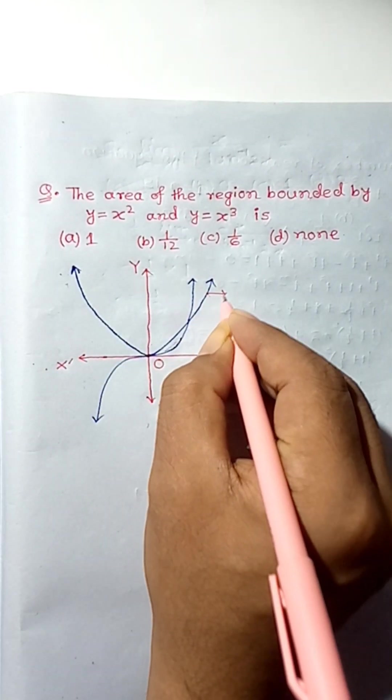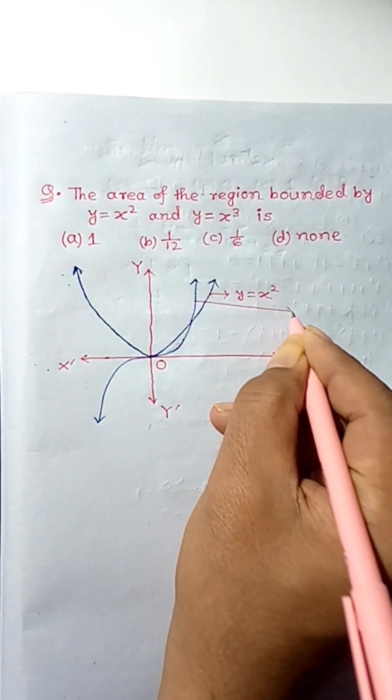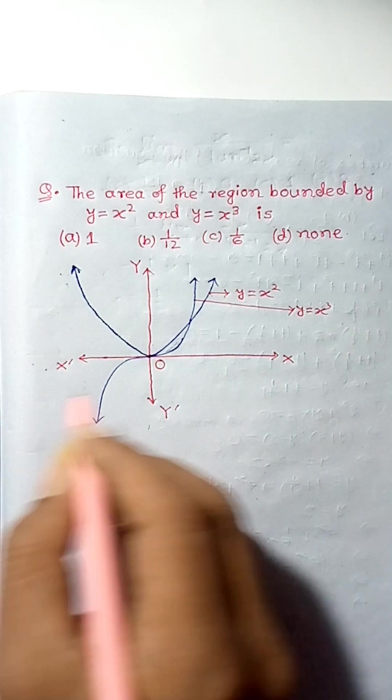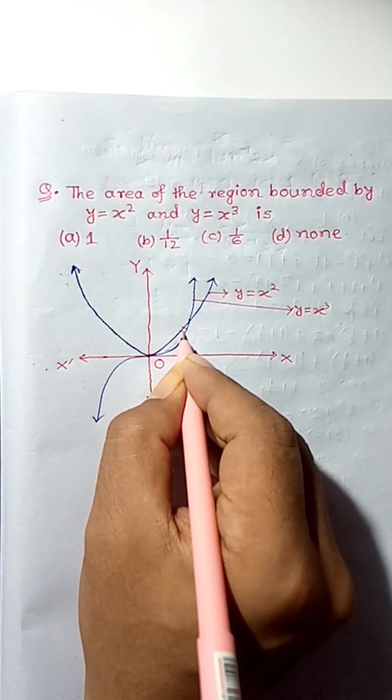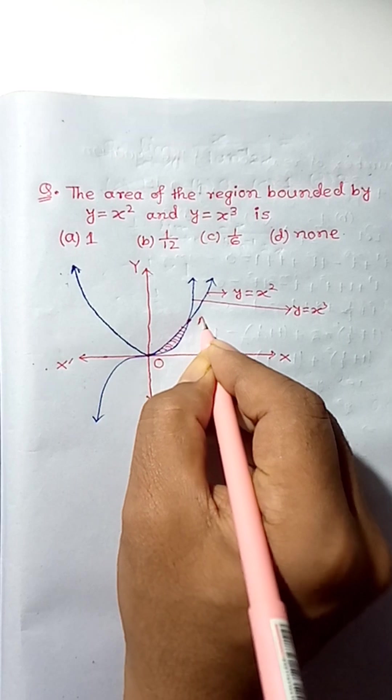This is y equal to x squared and this curve is y equal to x cubed. Okay, so we have to find the area of this region. Let's say this point is A.